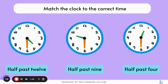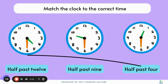Let's try matching these clocks using half past. The first clock: the minute hand is pointing to 6, so it will be half past. Then the hour hand is pointing between 4 and 5. Since it will always be the number that it is moving away from, it's going to be half past 4.